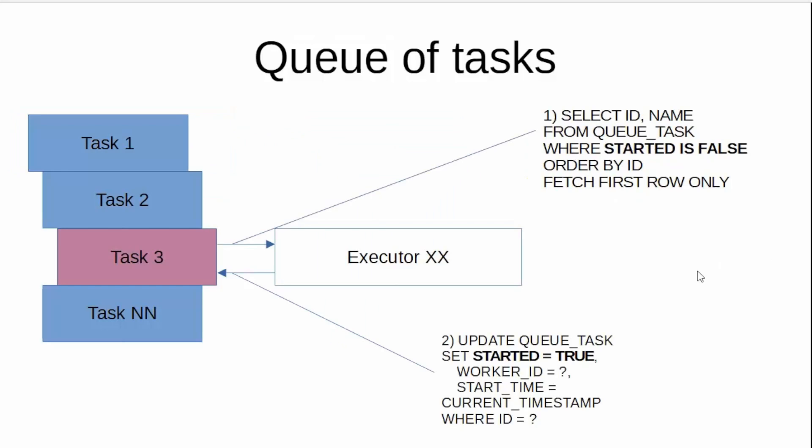After that, an executor can pick up the first outstanding task. In order to pick up the task, executors need to first search for the task. For this, the executor process will do the query: SELECT FROM qtasks WHERE flag started is false. And once this task is found, the executor will do an UPDATE to turn the flag started to true.